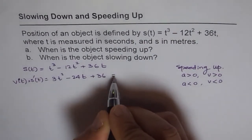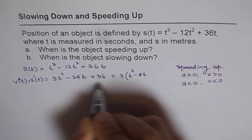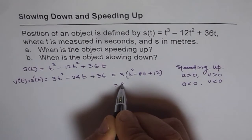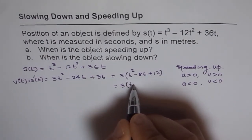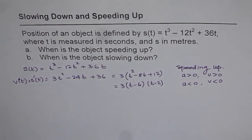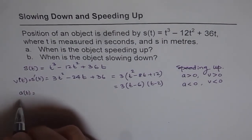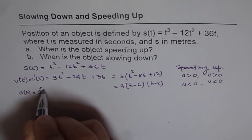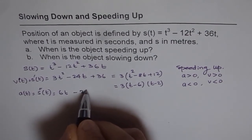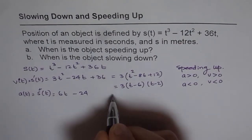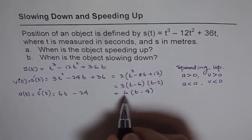This velocity can be factored. We write it as 3(t² - 8t + 12), and factoring further gives 3(t - 6)(t - 2). Now let's find acceleration, which is the derivative of velocity or the second derivative of displacement. Taking the derivative gives 6t - 24, which factors as 6(t - 4). So acceleration is 6(t - 4).